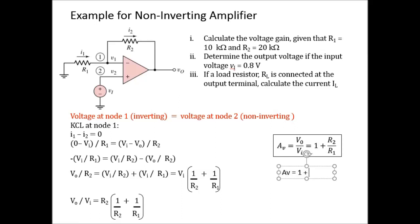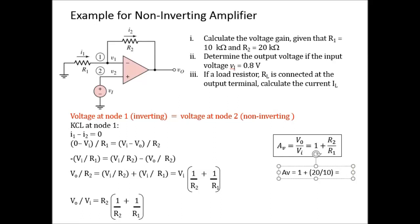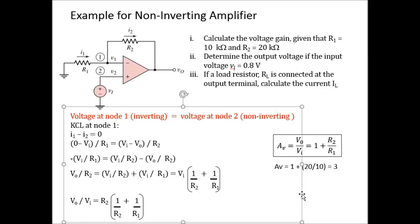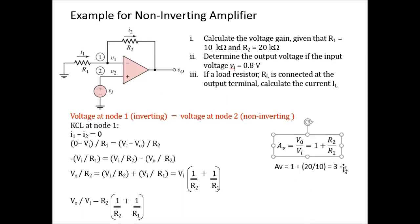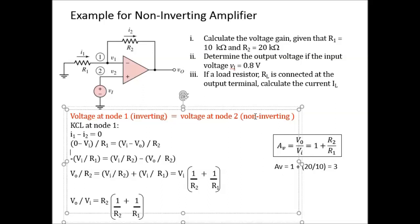Av = 1 + R2/R1 = 1 + 20/10 = 1 + 2 = 3. So the voltage gain is 3. This is the quick approach when you can identify the configuration straight away — it saves a lot of time.